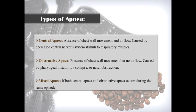The second type is obstructive apnea, which means presence of chest wall movement but no air flow. In central apnea there is no chest wall movement and no air flow, but in obstructive apnea there is chest wall movement but no air flow. If both central and obstructive apnea occur during the same episode, it is called mixed apnea.